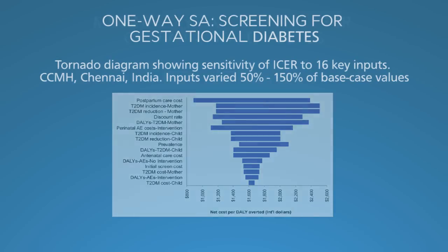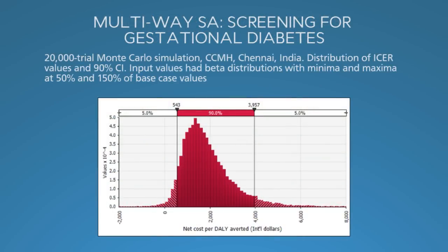Multi-way sensitivity analyses are the perfect way to summarize the aggregate effect of uncertainty in all inputs. A Monte Carlo simulation, as shown here, calculates the distribution of results from many iterations of the model. In this example, 20,000 iterations. The histogram shows the frequency of narrow ranges of results. It indicates that the most common result is very similar to the base case of $1,640, with 90% of the simulations between $400 and $4,000.